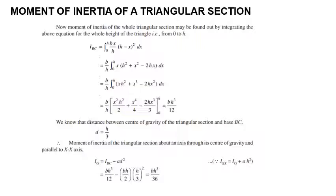So we have two important equations for the triangular section: the moment of inertia through the centroidal axis is BH cubed by 36, and the moment of inertia about the base is BH cubed by 12. The parallel axis theorem was applied to obtain the centroidal moment of inertia.